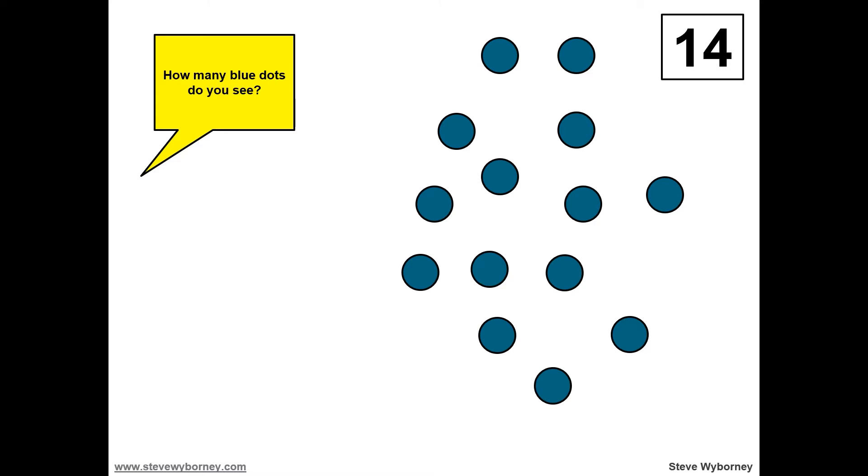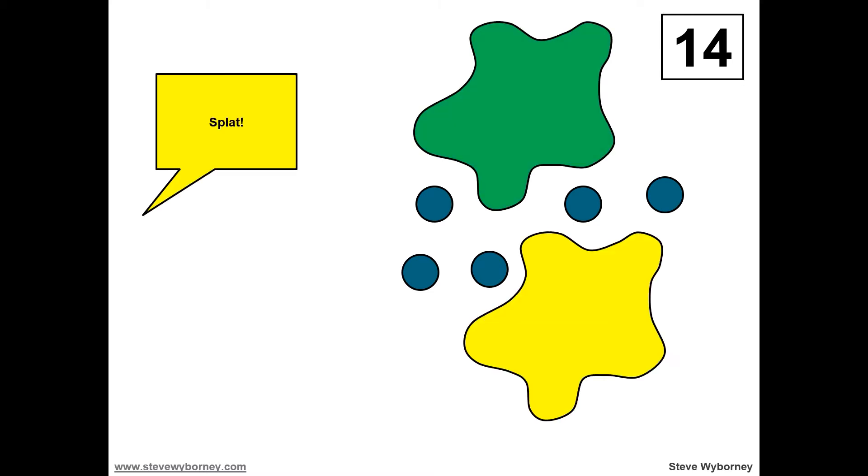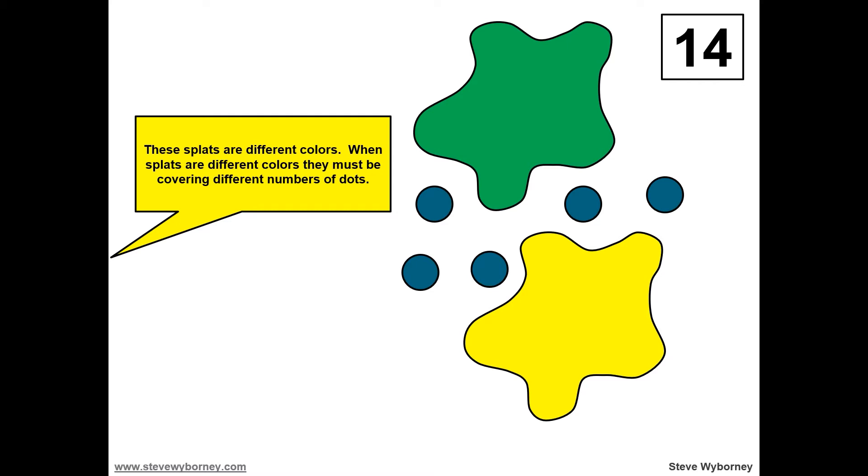Next, two splats will be coming. Each splat will cover a different number of dots. These splats are different colors, so there is a different amount of dots under each splat.